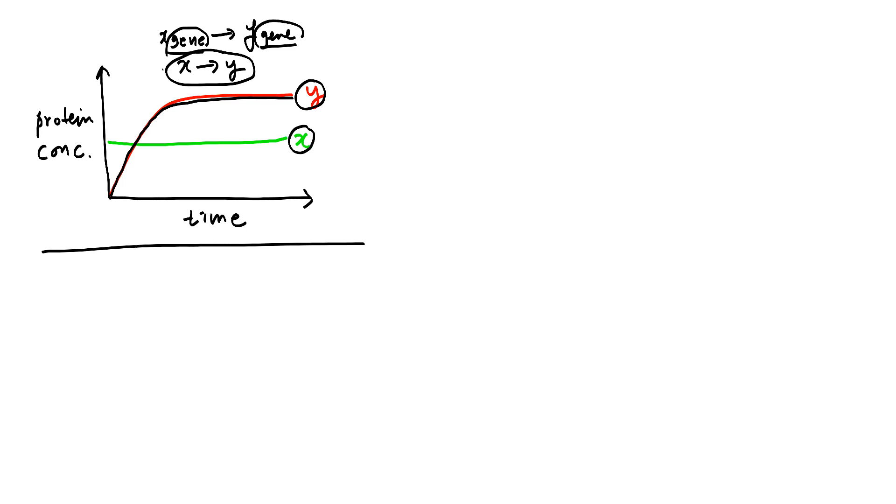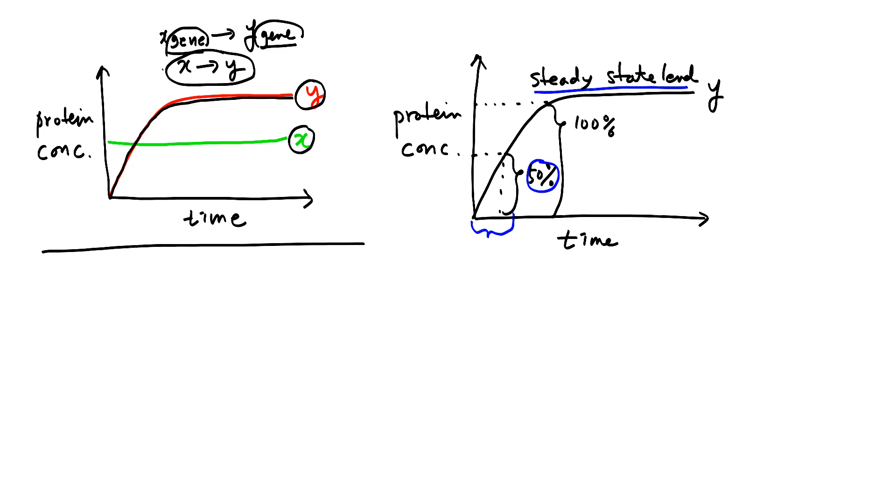And now I want to define a response time. We have this dynamics, or you may say Y protein dynamics. The time it takes to reach half of the steady state - so this is 100% and this is 50%, the steady state level. So the time it takes to reach 50% of the steady state level can be defined as response time. Basically response time tells us how fast the protein dynamic reaches the steady state level.